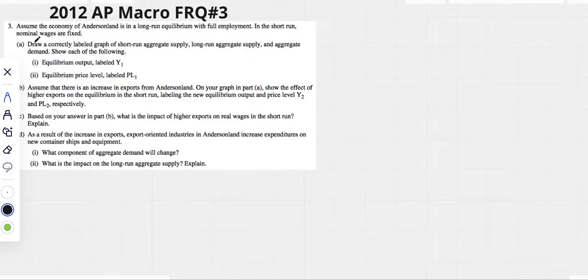This is AP Macro FRQ number three. Assume that the economy of Anderson Land is in a long-run equilibrium with full employment. Nominal wages are fixed. Draw a correctly labeled graph of short-run, long-run, and aggregate demand with Y1 and PL1.